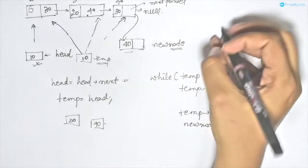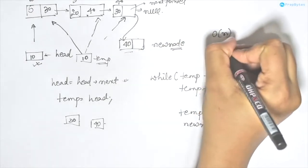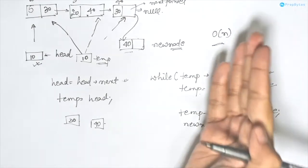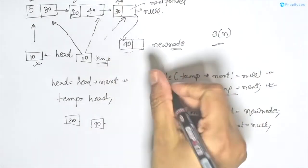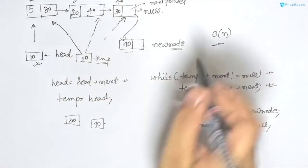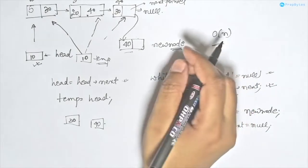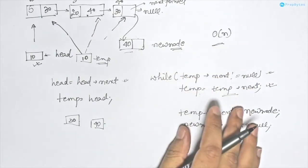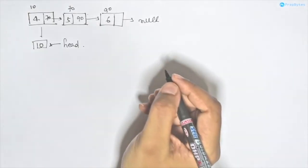The time complexity for inserting a node at the end of the linked list is O(n), given that we only have a head pointer and must traverse the entire list.